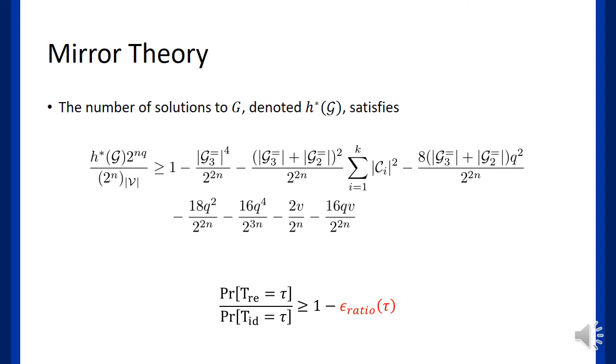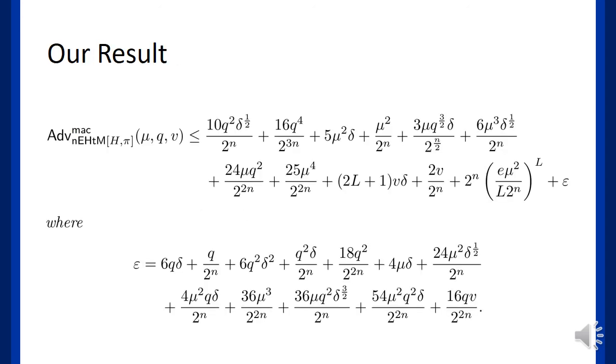Therefore, we could find a sufficiently sharp estimation of epsilon_ratio. Finally, after applying the expectation method, we get the security bound of nEHtM.